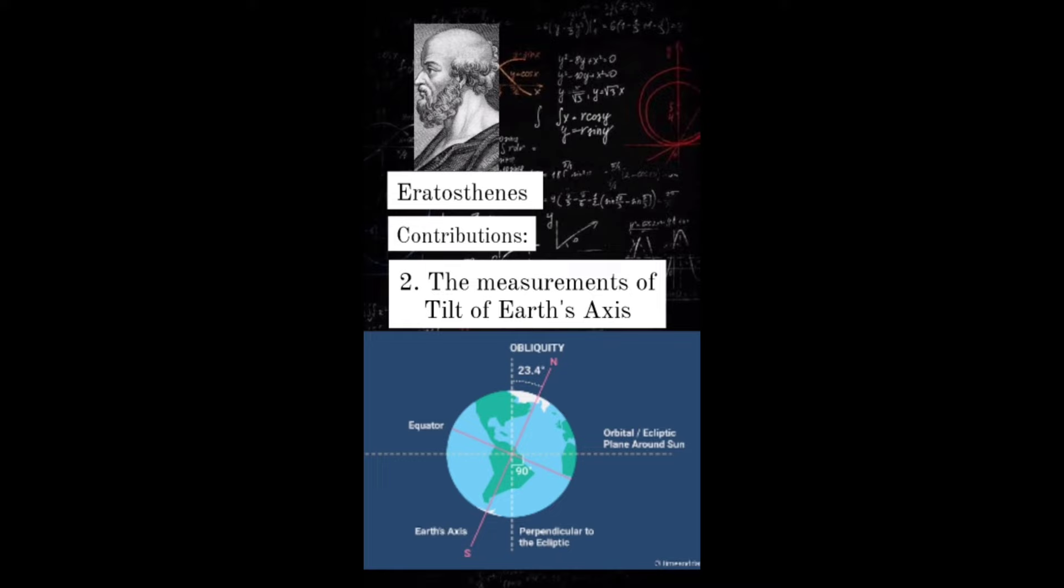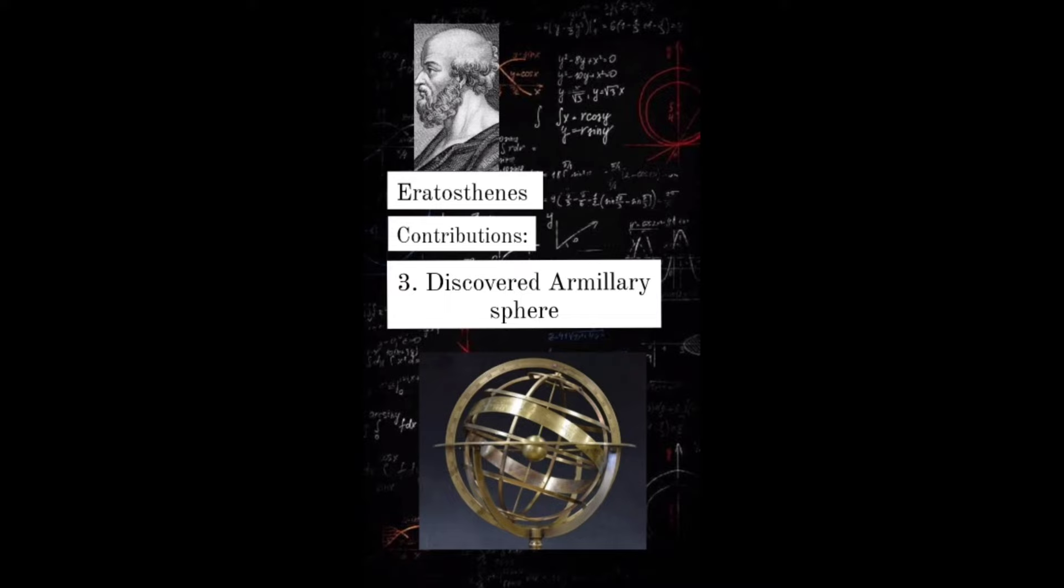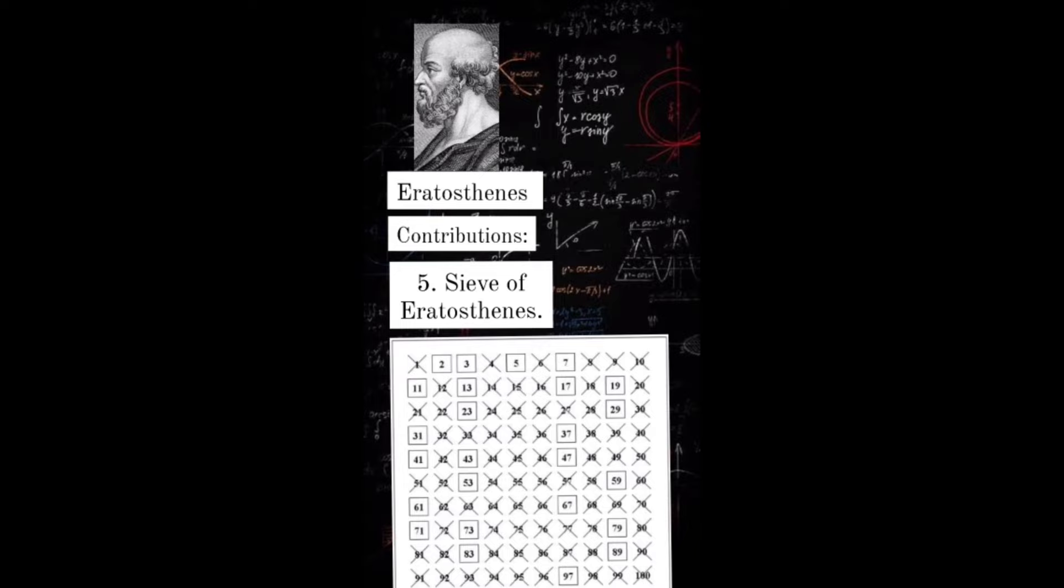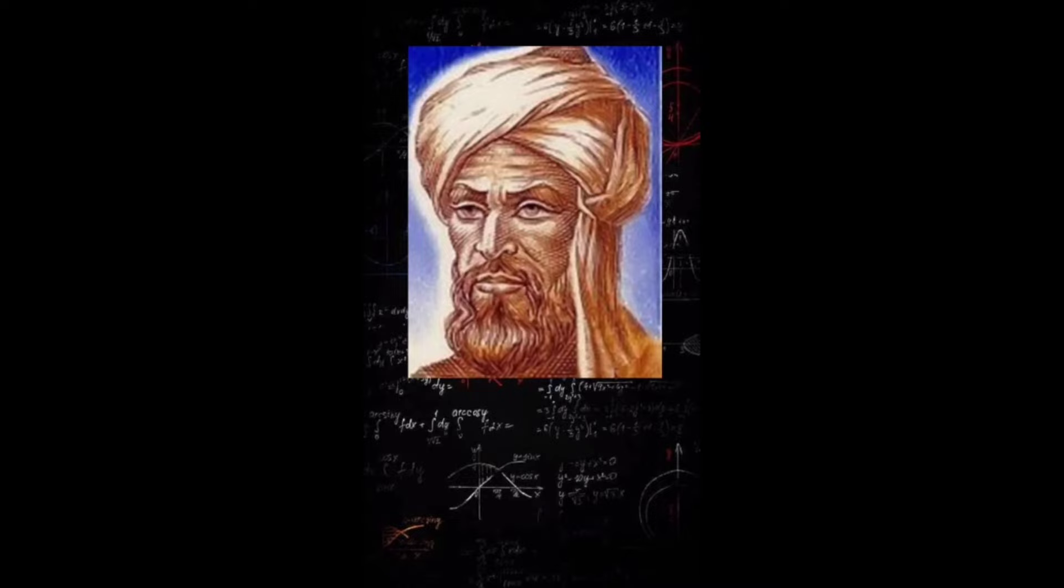Second, the measurement of tilt of Earth's axis. Third, discovered armillary sphere, an instrument to predict the motion of stars. Fourth, discovery of calendar having a leap year. Fifth, he provided an algorithm to find the prime numbers. This was called Sieve of Eratosthenes.